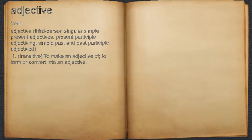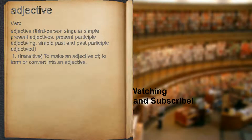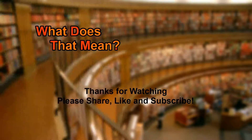Adjective. Verb. 1. Transitive: to make an adjective of; to form or convert into an adjective.